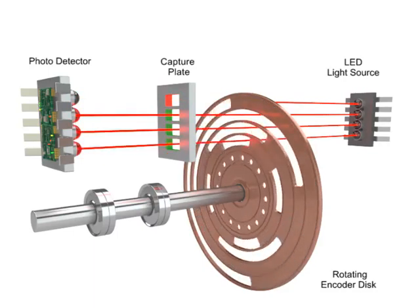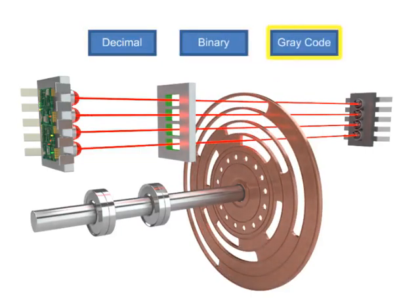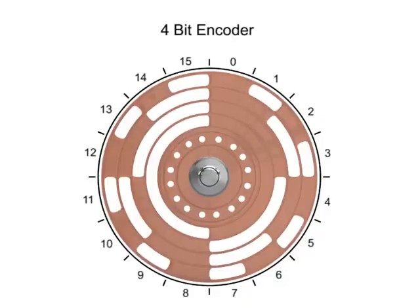The most common types of numerical encoding are decimal, binary, and gray code. In a four-bit encoder there are 16 unique combinations or numeric codes every 22.5 degrees.